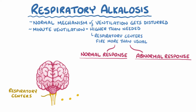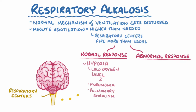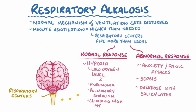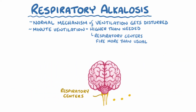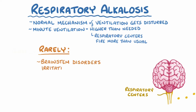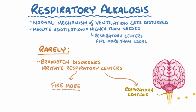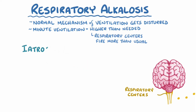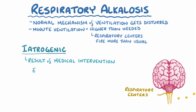Increased ventilation is a normal response to things like hypoxia, which is a low oxygen level that happens with diseases like pneumonia or a pulmonary embolism, or even when a person climbs a high mountain like Mount Everest. However, increased ventilation can be an abnormal response that sometimes happens in situations like anxiety and panic attacks, as well as in sepsis or in overdoses with salicylates. Rarely, brainstem disorders can irritate the respiratory centers and make them fire more. Sometimes increased minute ventilation is iatrogenic, meaning it's a result of a medical intervention — for example, a person might be intubated and on a ventilator, and if the ventilator settings aren't correct, it can cause a respiratory alkalosis.